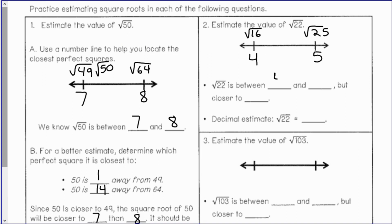The square root of 22 is between 4 and 5, but it's closer to 5 because the square root of 22 is only 3 spaces away from 25 and 6 spaces away from 16 — a little bit over halfway to 5. Therefore, a good decimal estimate would be about 4.7.